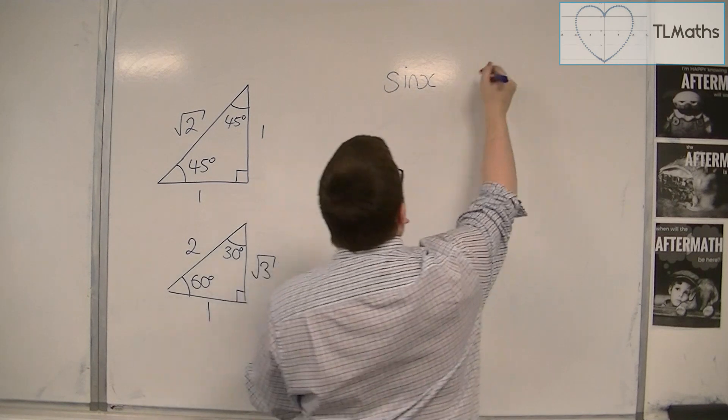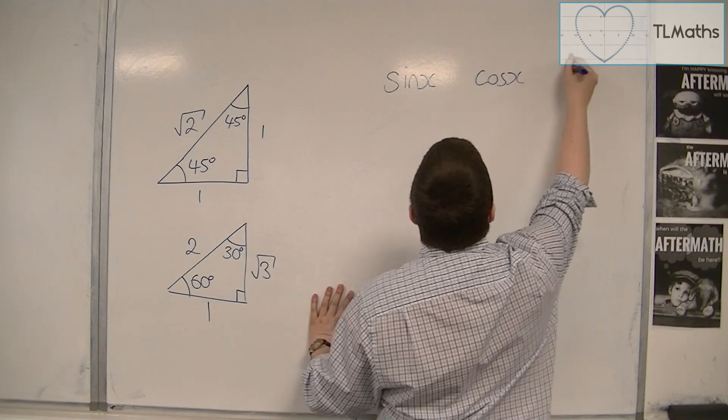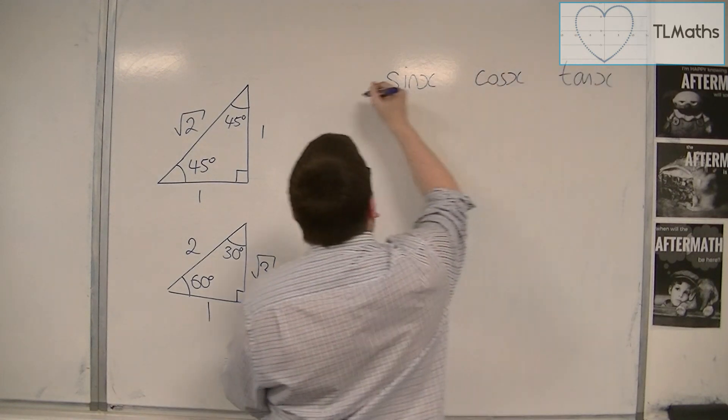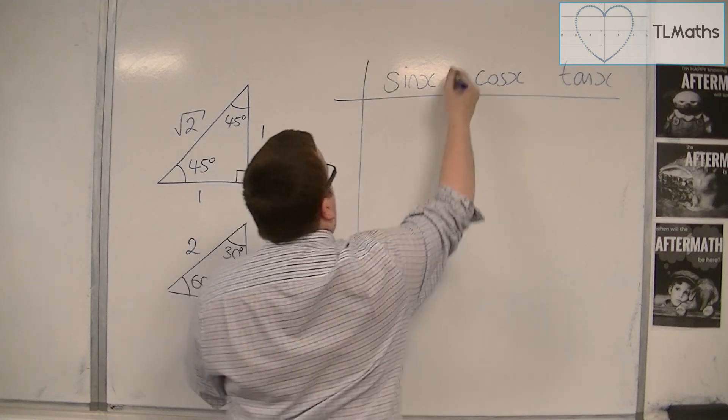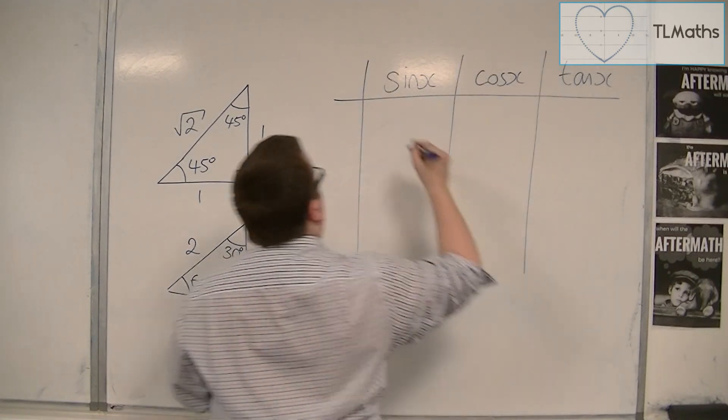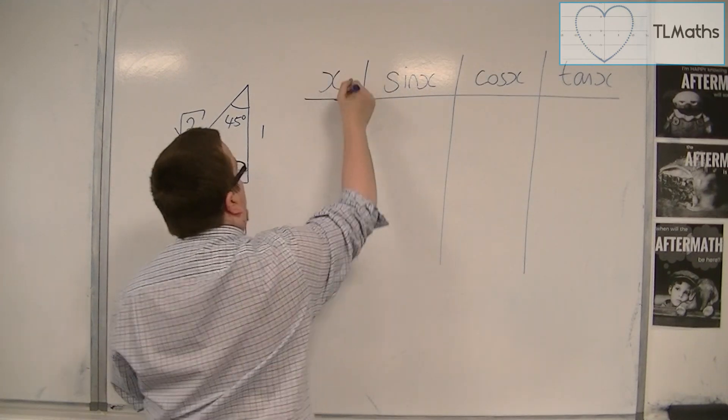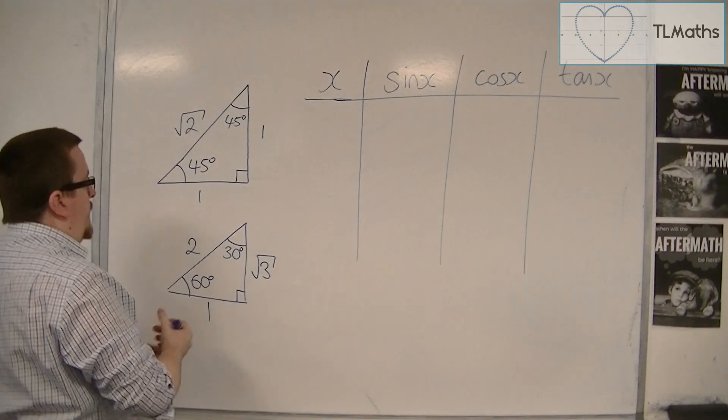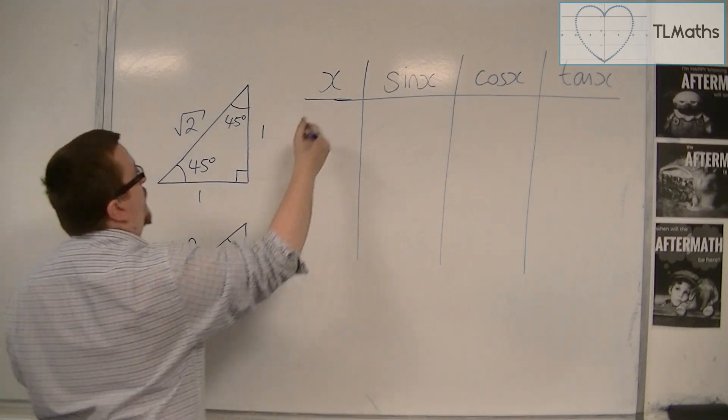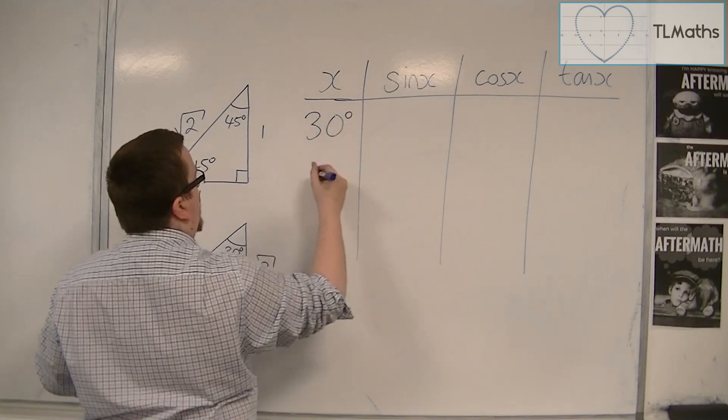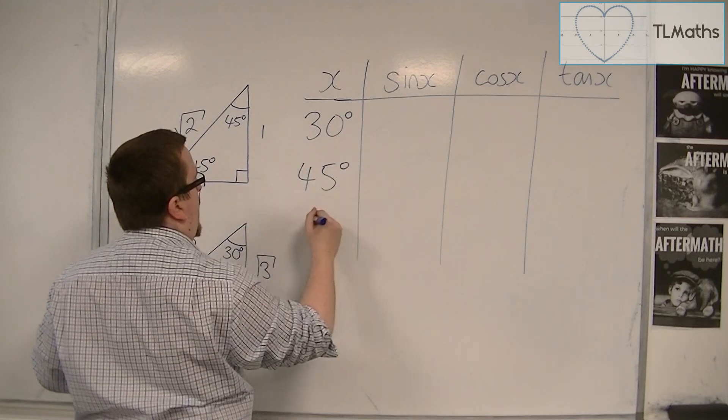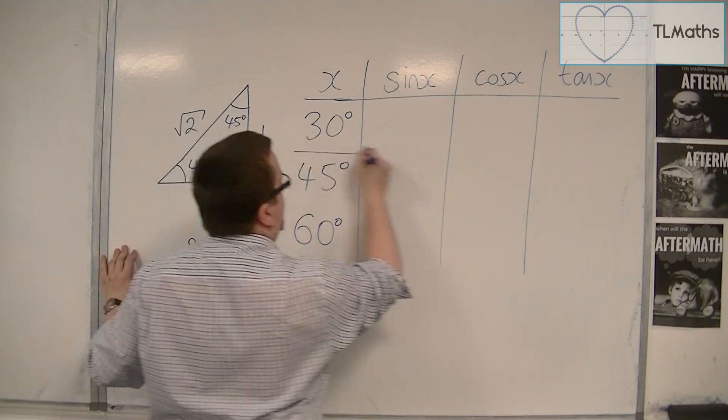So what we can now do is we could build up a table. So we could have sine x, cos x, and tan x. And let's say these are my x values. And those are the angles that we're looking at. So we've got a 30 degree angle. We've got 45 and we've got 60.